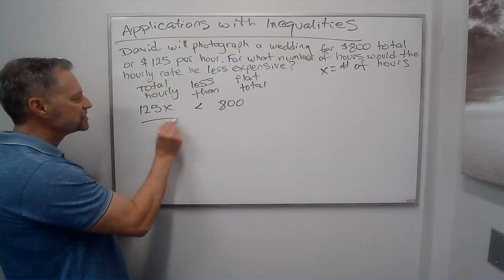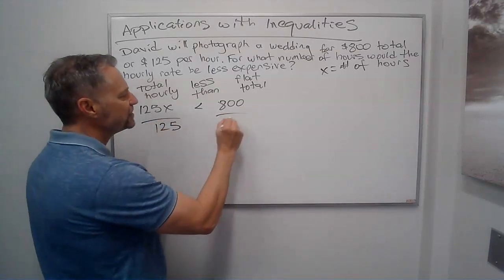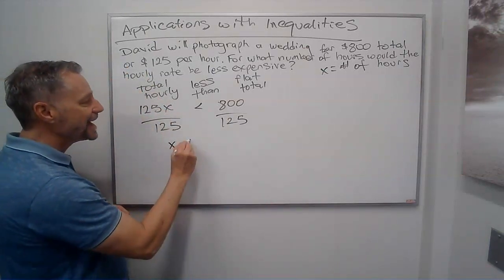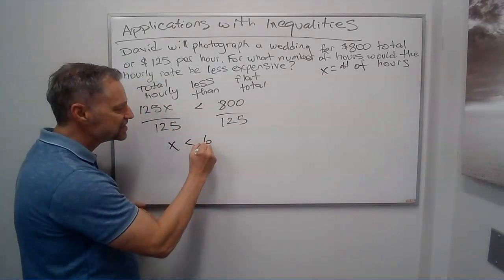So now from there, we just are going to divide both sides by 125. Remember, if you divide both sides by a positive number, you don't flip the inequality. I get X is less than, that comes to 6.4 hours.